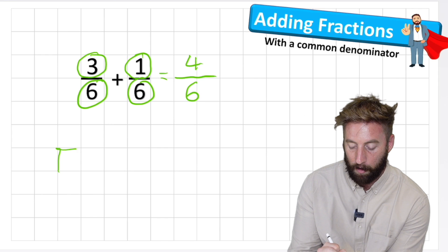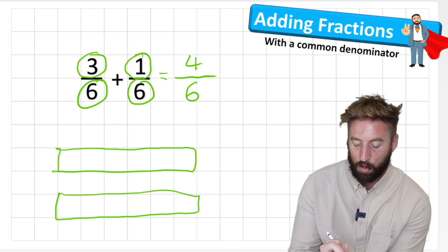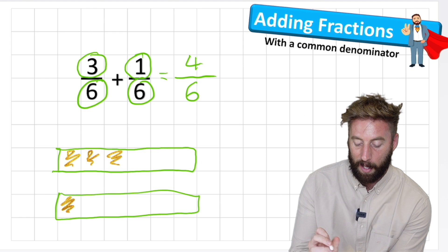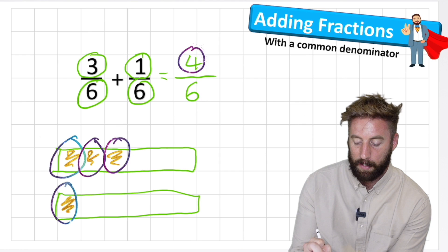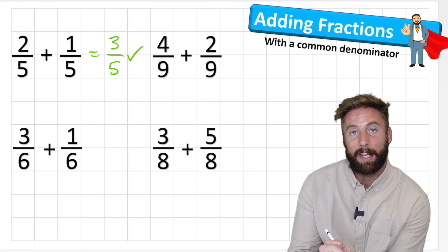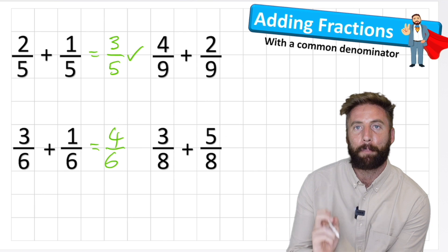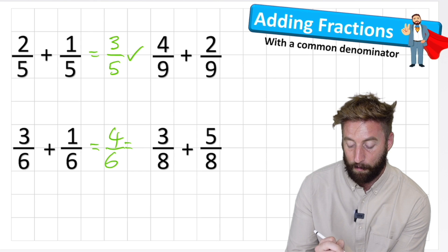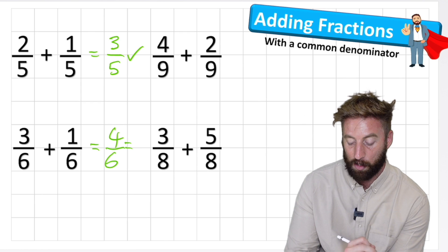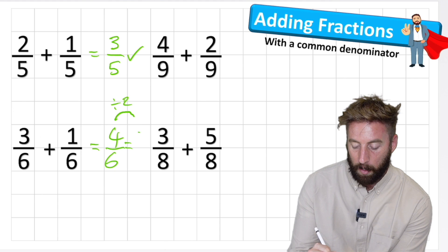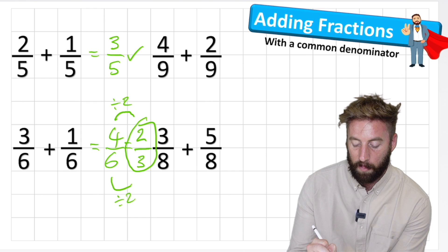Let me check with a bar model. I'll draw one roughly: one, two, three, four, five, six. On my first fraction I have one, two, three. And in my second fraction I have one sixth. Altogether: one, two, three, four sixths. So the answer to question two is three sixths add one sixth equals four sixths. But I think we have a simpler form - four and six have a common factor of two. Four divided by two equals two, six divided by two is three. So my simplified answer is two thirds.